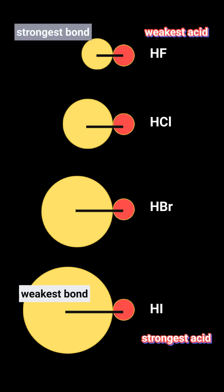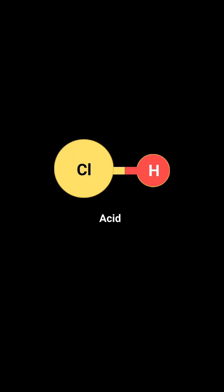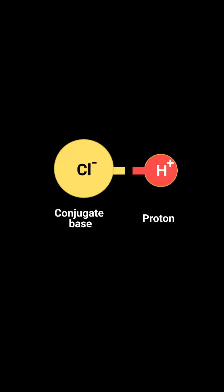Another crucial factor is the stability of the conjugate base formed after the acid donates a proton. A more stable conjugate base, often due to electronegativity or resonance, favors acid dissociation and increases acid strength.